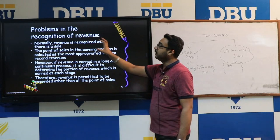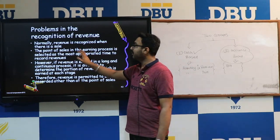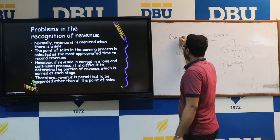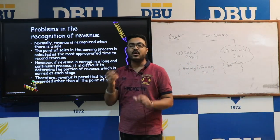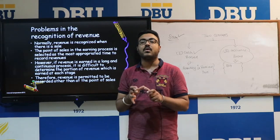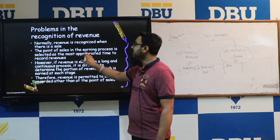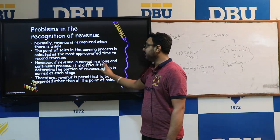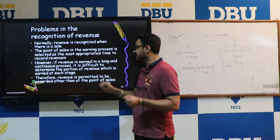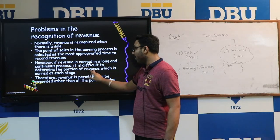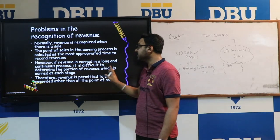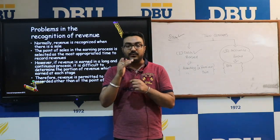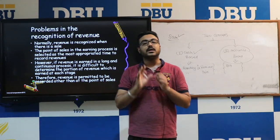Now the problems in the recognition of revenue: the first main problem is that revenue is recognized when there is a sale. Only when a sale occurs should revenue be recorded. The point of sale in the earning process is selected as the most appropriate time to record revenue. However, if revenue is earned in a long and continuous process, it is difficult to determine the portion earned at each stage, so revenue may be recorded other than at the point of sale.